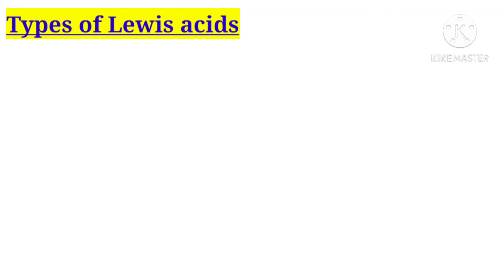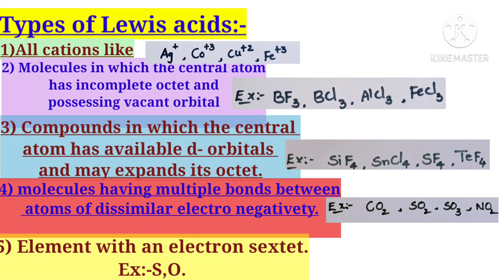What are the types of Lewis acids? All cations act as Lewis acids. For example, Ag+, Co+3, Cu+2, and Fe+3. These cations act as Lewis acids because they are accepting an electron pair from another atom. Also, molecules in which the central atom has an incomplete octet and possesses a vacant orbital also act as Lewis acids.